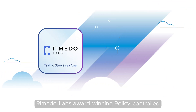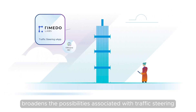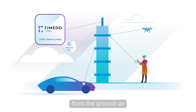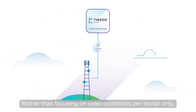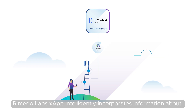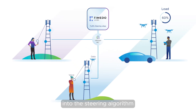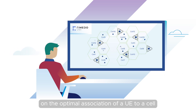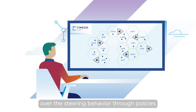Rometo Labs' award-winning policy-controlled Traffic Steering xApp broadens the possibilities associated with traffic steering by redefining the fundamentals of this technology from the ground up. Rather than focusing on radio conditions per sector only, Rometo Labs' xApp intelligently incorporates information about per-UE cell association, services, and cell site load into the steering algorithm to produce a holistic decision on the optimal association of a UE to a cell.